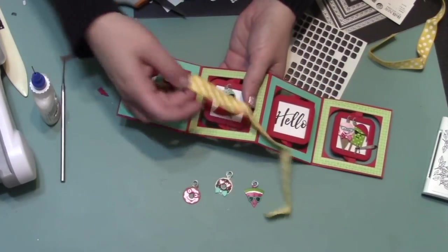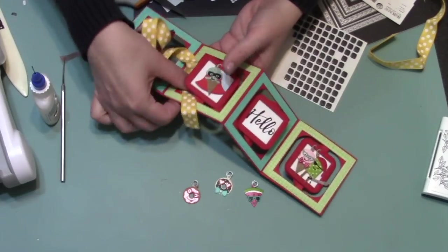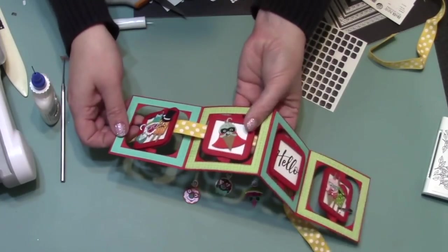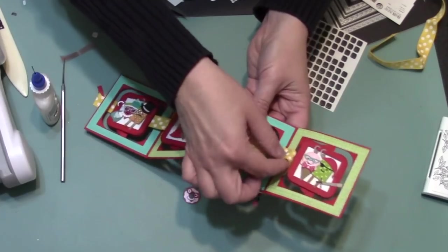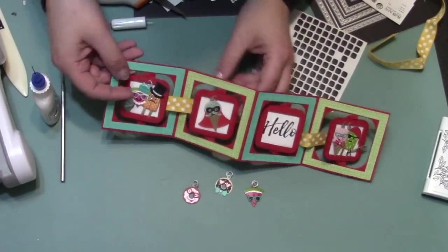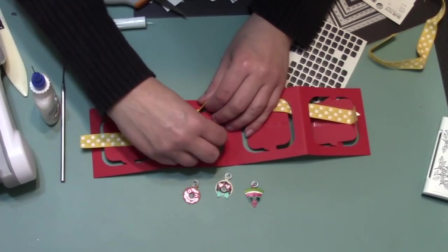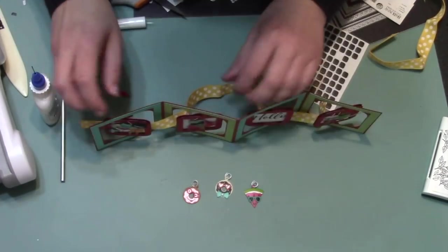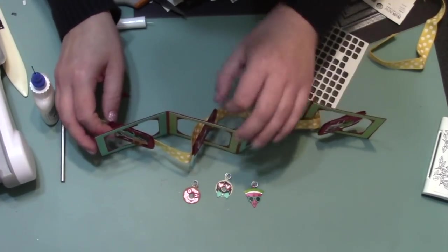Then the ribbon needs to go across the front of the album and then back behind the second square. Then it will stay behind the album between the second two squares, but then go in front again between squares 3 and 4. Now I can turn over to the back side and work on the second square.